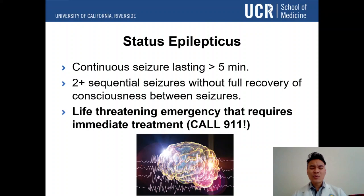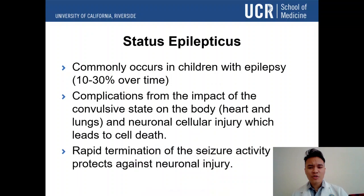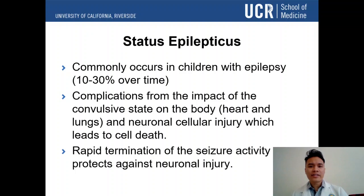Status epilepticus is a continuous seizure lasting greater than five minutes, or two or more sequential seizures without full recovery of consciousness between them. This is life-threatening and requires immediate intervention — call 911. It commonly occurs in 10–30% of children with epilepsy over time. Complications include impact on the heart and lungs and neuronal cellular injury leading to cell death. Rapid termination of seizure activity protects against neuronal injury.